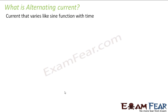So let us see what alternating current is. When we spoke about direct current, it was nothing but the flow of electrons. So even alternating current is nothing else but flow of electrons. How does it differ from direct current? We will define alternating current as a current that varies like a sine function with time.